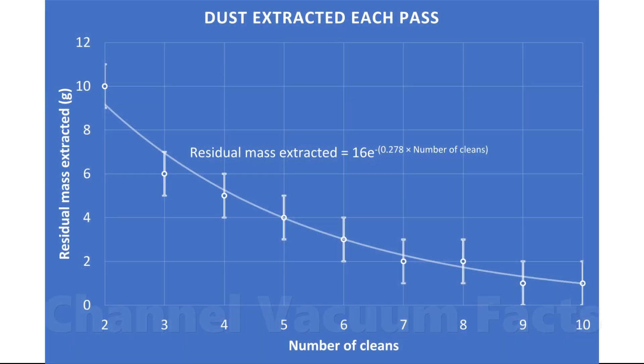I plotted the residual masses as a function of the number of vacuum sessions, as you can see here. Exactly as I stated in the video in the second link in the description, you exponentiate high concentrations of dust in the carpet down with each pass of the vacuum, and this applies to every vacuum.